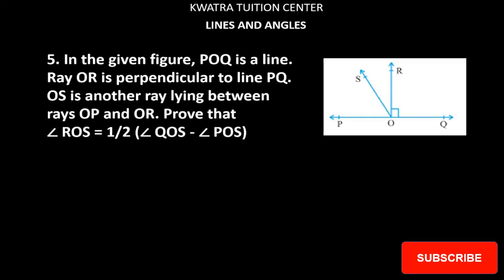First of all, let's see what we need to prove. Here I will involve angle ROS — this is my angle ROS. And second, I will prove the relation with QOS. So first of all, what do we need to do? We need to divide our figure into two parts, and then let's try to understand how we can solve it.